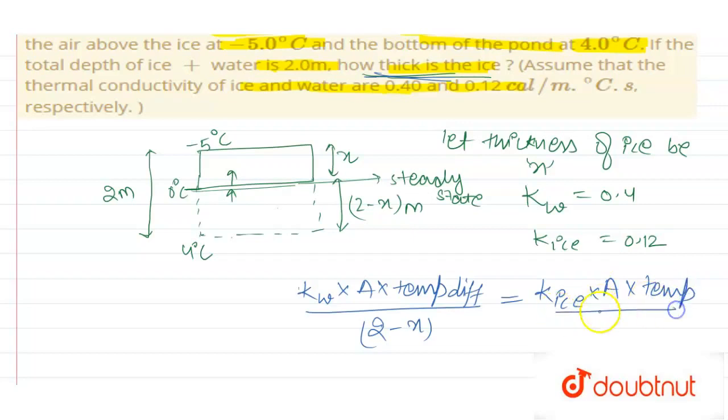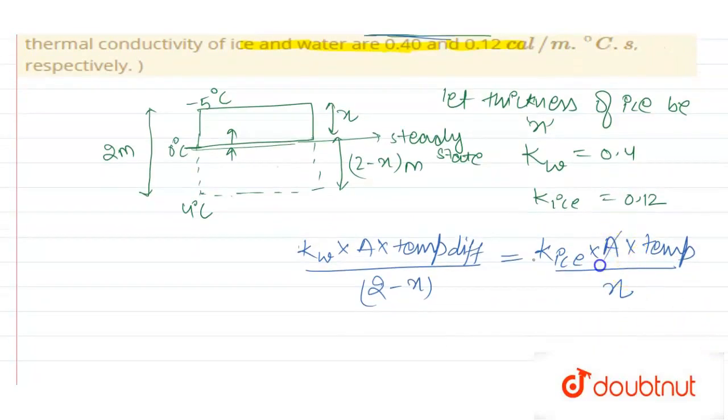This should equal k of ice times area times temperature divided by thickness x. Area cancels out, and kw value given is 0.4 times temperature difference, which is 4.